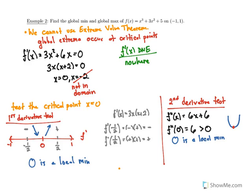Since x = 0 is a local min with the function concave up and decreasing then increasing, x = 0 is the global min. There is no global max because the function on an open interval looks like it has open holes at the endpoints — we won't be able to achieve a maximum. We don't have to have both a global min and global max; a closed and bounded interval guarantees one, but an open or unbounded domain does not.